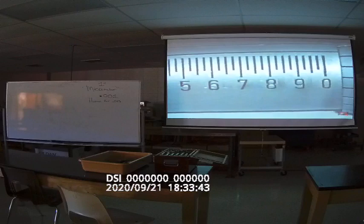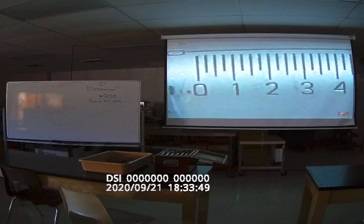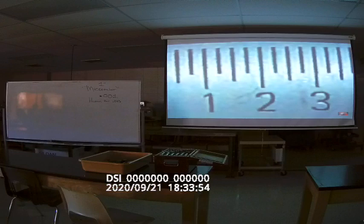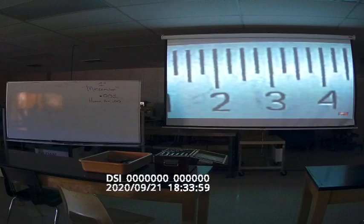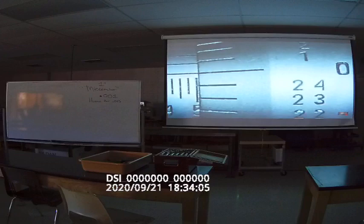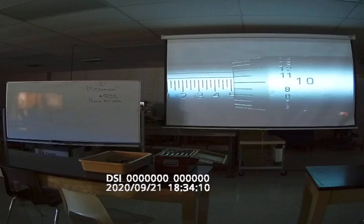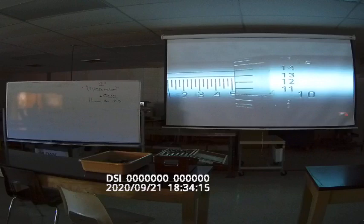There are 40 equal lines on the sleeve and each line represents 25,000th of an inch. Every fourth line is a little longer and represents 100,000th of an inch. For example, the line marked 1 represents 100,000th of an inch and the line marked 2 represents 200,000th of an inch. The beveled edge of the thimble is divided into 25 equal parts with each part representing 1,000th of an inch. When the thimble is turned one complete revolution, it advances the spindle in or out 25,000th of an inch.